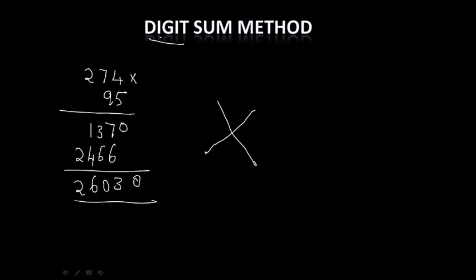So what is the meaning of digit sum method? So we have to sum up the digits present in multiplicand, multiplier and in the final answer we got. So now let us do one by one.